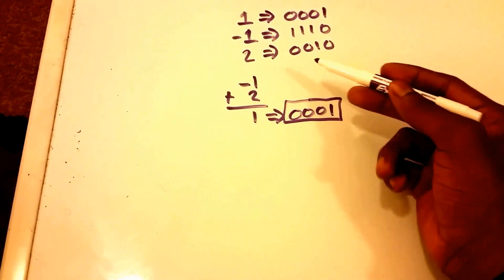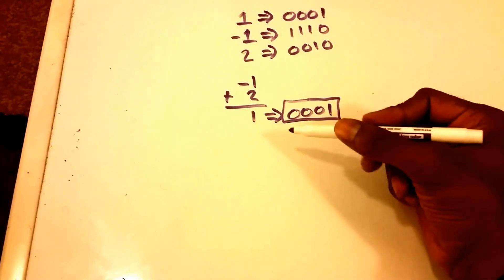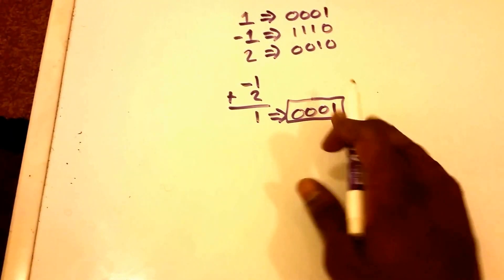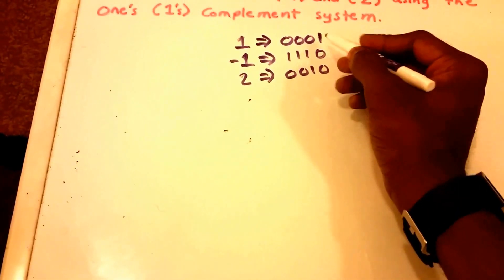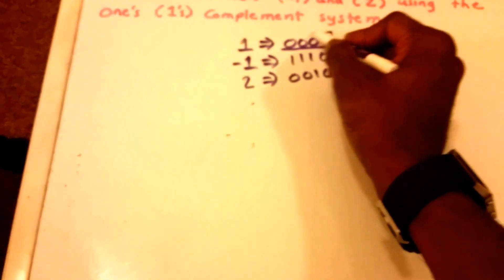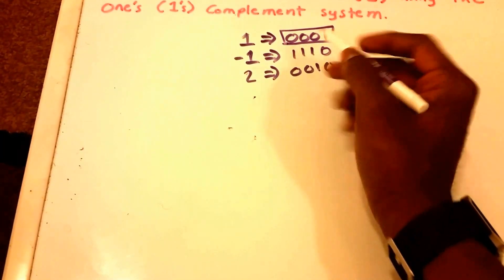When we are adding these two binary digits together, I'm gonna go ahead and erase this here. Again, this is what we are expecting up here, that 0001.